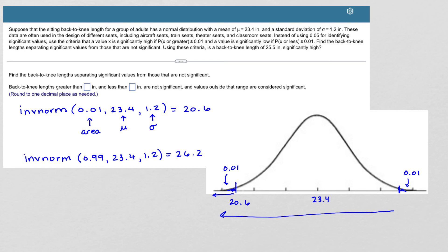And here we go. So this is 26.2. And then it says, using this criteria, is a back-to-knee length of 25.5 inches significantly high? So 25.5 is going to be roughly here. All I need to know is that it's between 20.6 and 26.2. So this would be not significant.